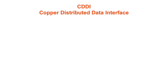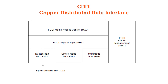Copper Distributed Data Interface, or CDDI, is the implementation of FDDI protocols over twisted pair copper wire. Like FDDI, CDDI provides data rates of 100 megabits per second and uses dual ring architecture to provide redundancy. CDDI supports distances of about 100 meters from desktop to concentrator. CDDI is defined by the ANSI X3-T9.5 committee. The CDDI standard is officially named the Twisted Pair Physical Medium Dependent, or TPPMD standard. It is also referred to as the Twisted Pair Distributed Data Interface, or TPDDI, consistent with the term Fiber Distributed Data Interface.